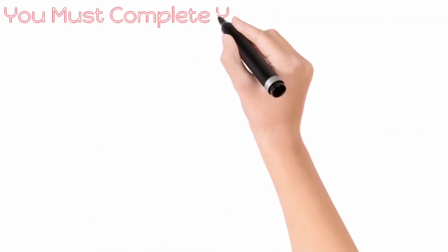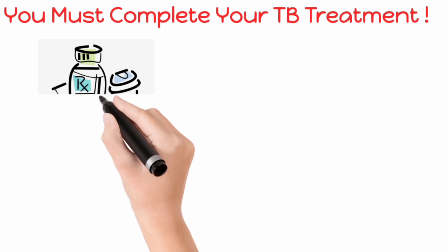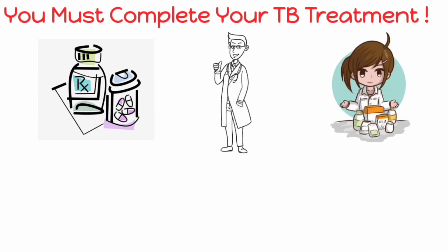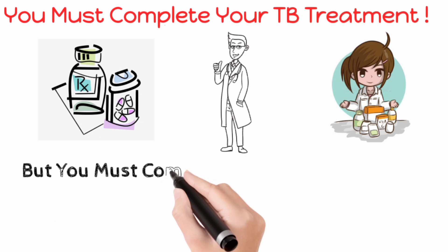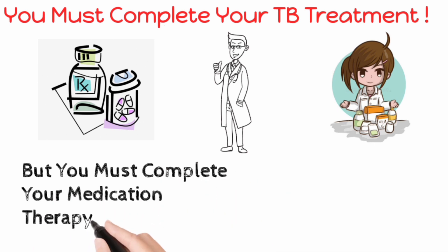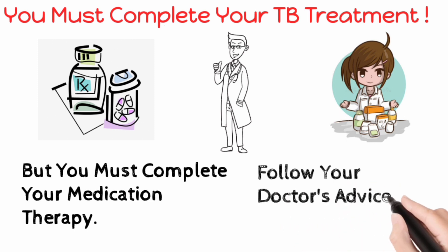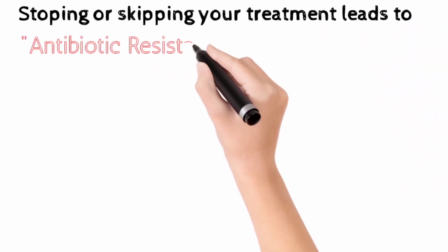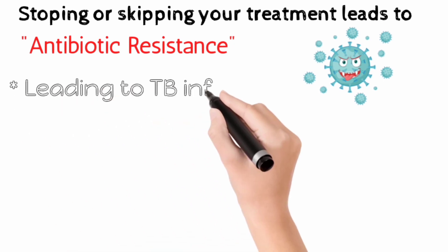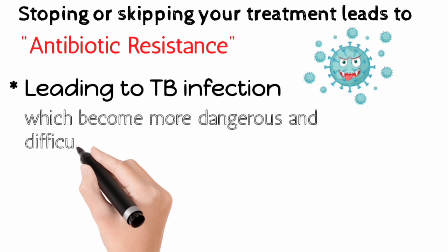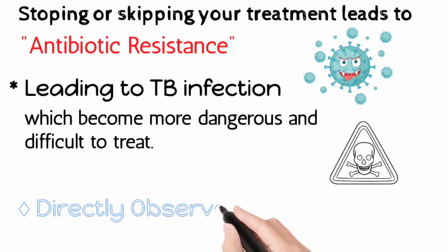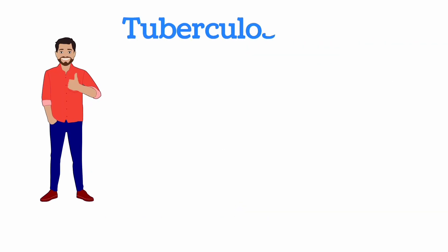Completing treatment is essential. After a few weeks you won't be contagious and you may start to feel better. It might be tempting to stop taking your TB drugs, but it is crucial that you finish the full course of therapy and take the medications exactly as prescribed by a doctor. Stopping treatment too soon or skipping doses can allow the bacteria that are still alive to become resistant to those drugs, leading to TB that is much more dangerous and difficult to treat. To help people stick with their treatment, a program called Directly Observed Therapy, or DOT, is recommended.